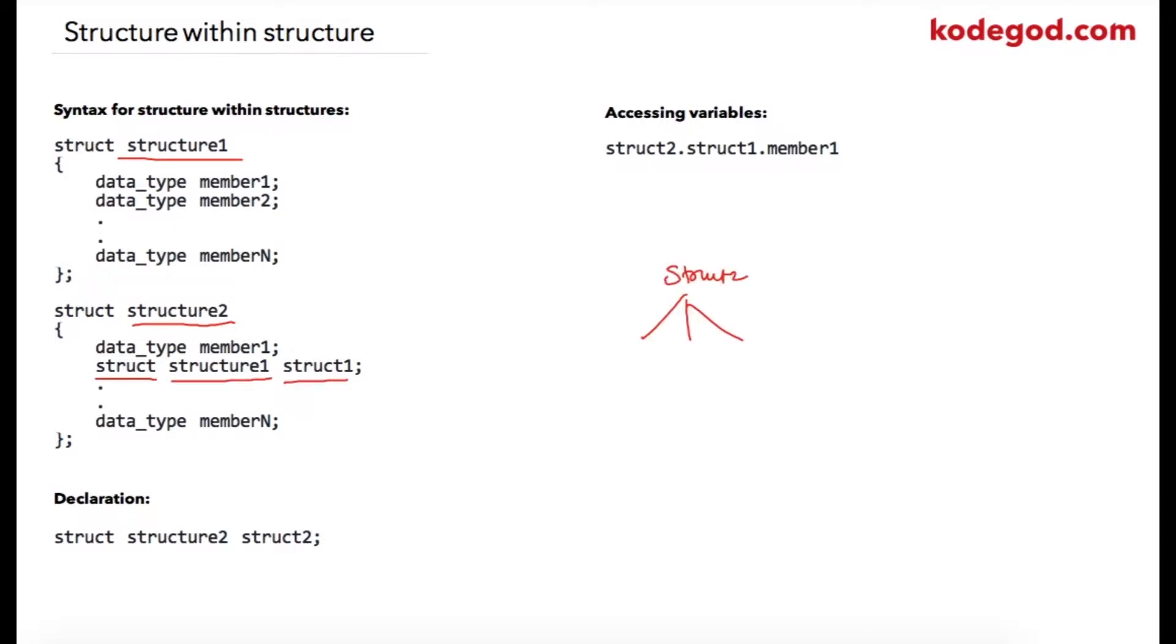Structure2 is having some data members inside of it, after which there is one data member of type struct1. Inside of struct1 there would be data members of struct1. When we declare a variable struct2 of type structure2, we can access variables of struct2 as struct2.membername.